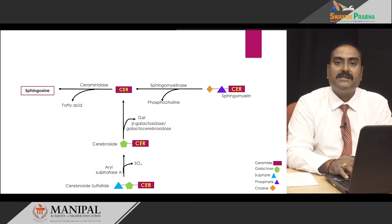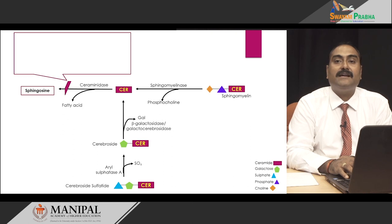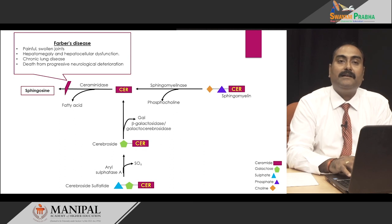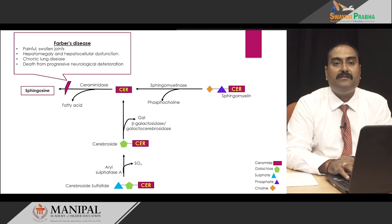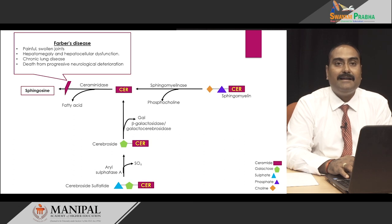There are certain disorders that occur when this biodegradation pathway is affected. If there is deficiency of the ceramidase enzyme, then we have a disease known as Farber's disease. The characteristics of Farber's disease are painful swollen joints; in addition to that, hepatomegaly and hepatocellular dysfunction are seen. Hepatomegaly means enlargement of the liver and hepatocellular dysfunction means dysfunctioning of liver cells. Chronic lung disease is also seen in patients with Farber's disease, and death is generally from progressive neurological deterioration with failure to thrive.